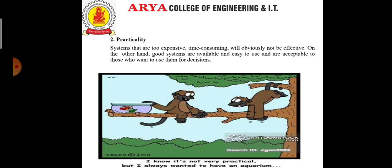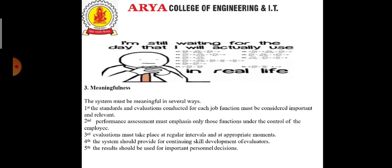The next characteristic is practicality. Systems that are too expensive or time-consuming will obviously not be effective. Good systems should be available and easy to use. For example, performance data can be entered in user-friendly software and should be acceptable to those who want to use it for better decision making regarding individual employees in the organization.